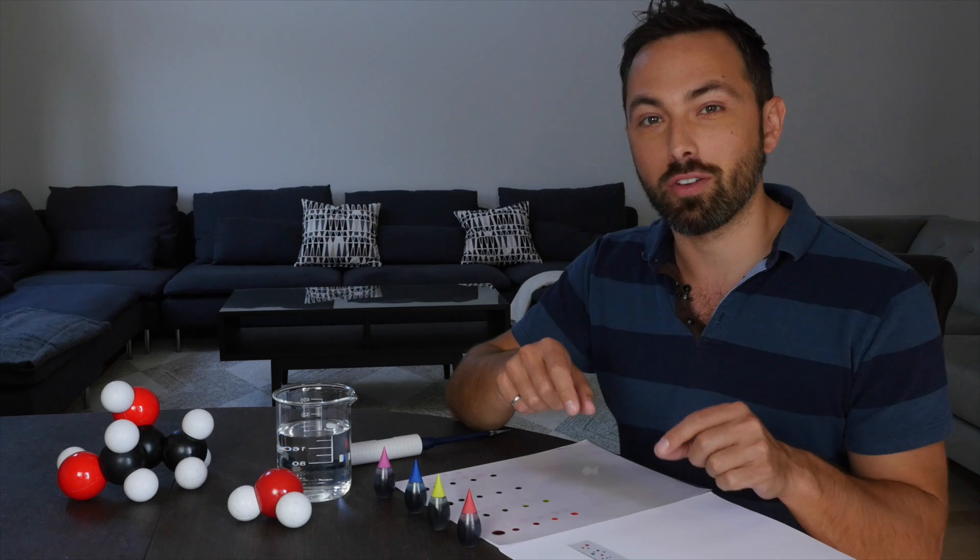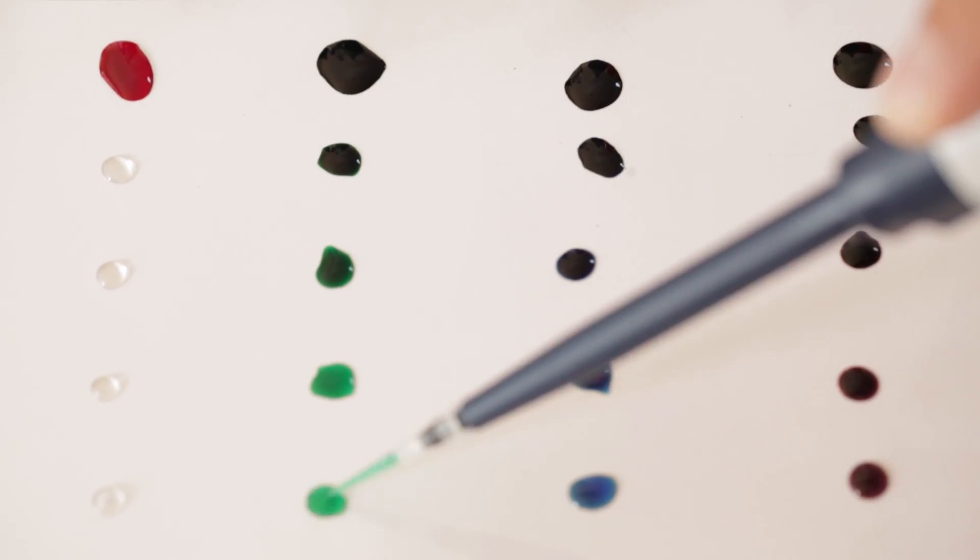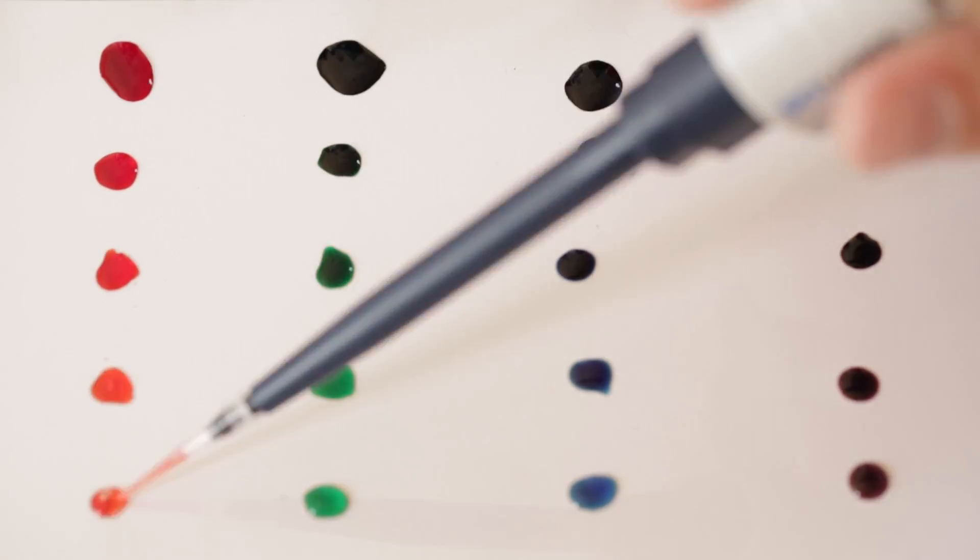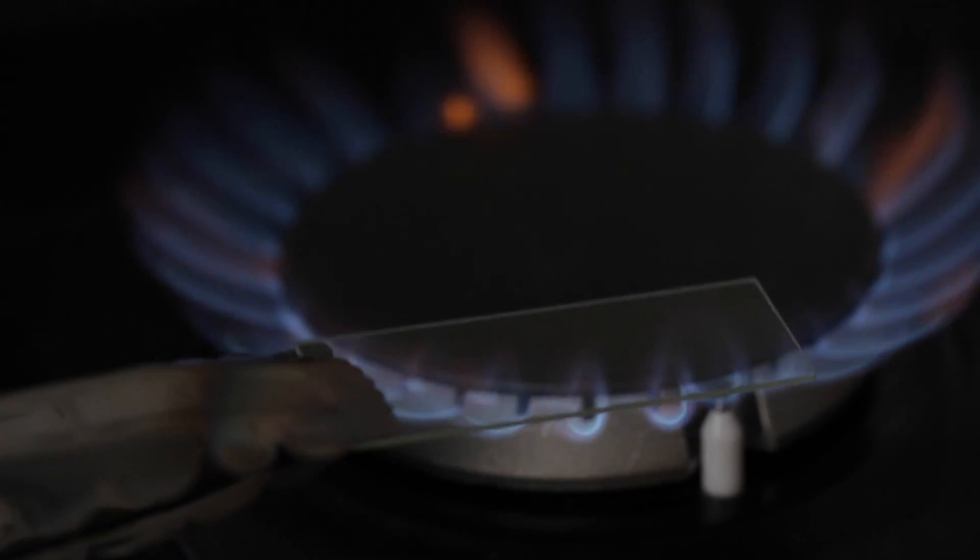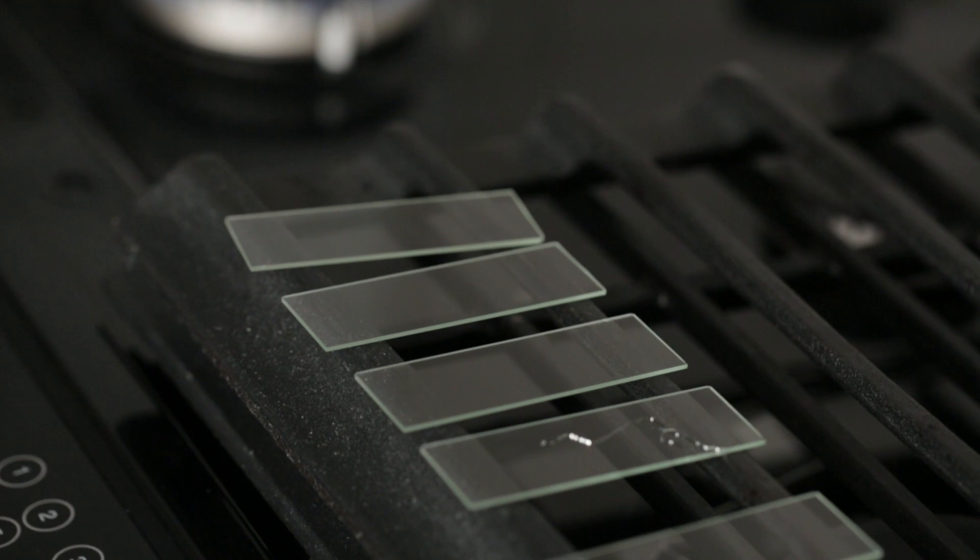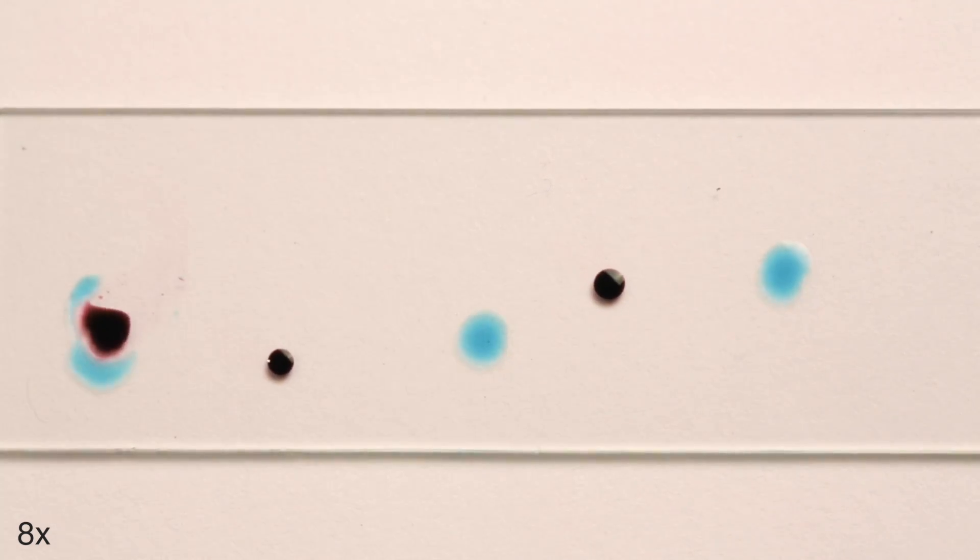Well if you want to try this out for yourself, you need to get some ordinary food coloring and dilute it with distilled water using a pipette. Then pass the microscope slide through a flame for about 30 seconds. Let it cool and then put some drops of different concentration onto the slide.